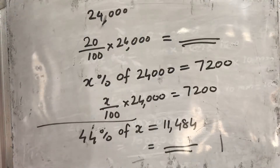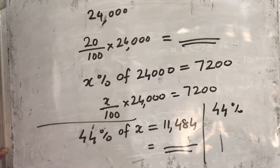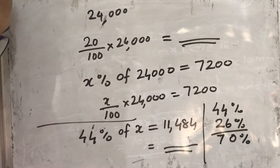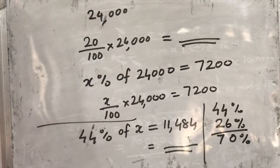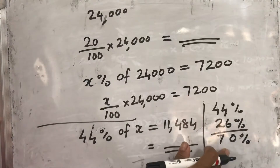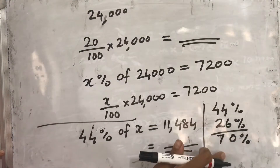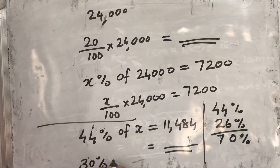One more part: find the number of voters who did not vote for either Ramesh or Sadish. Ramesh scored 44% and Sadish scored 26%, so together they scored 70%. The percentage of voters who did not vote for either of them is 100 minus 70, which equals 30%. Then we find 30% of the total votes to get the required answer.